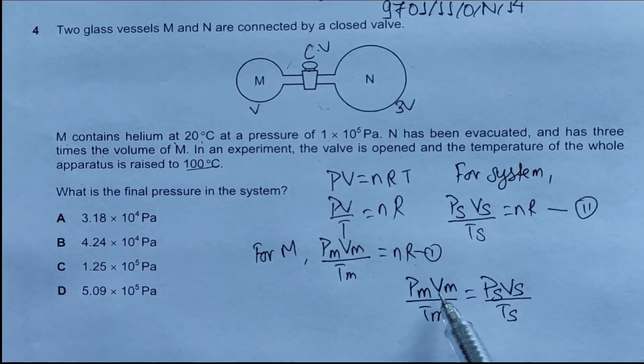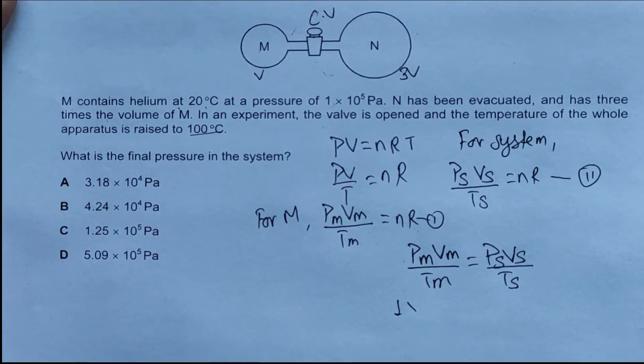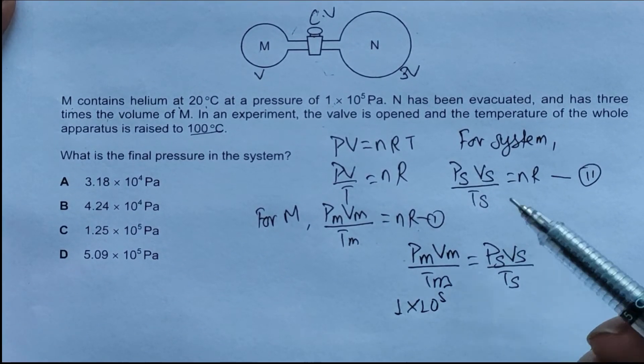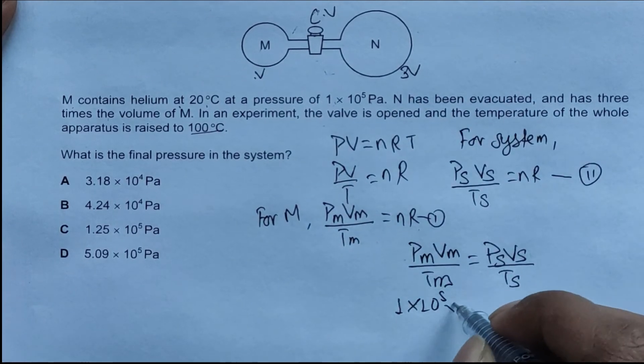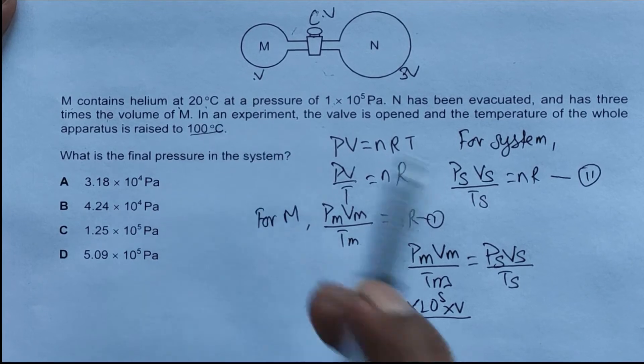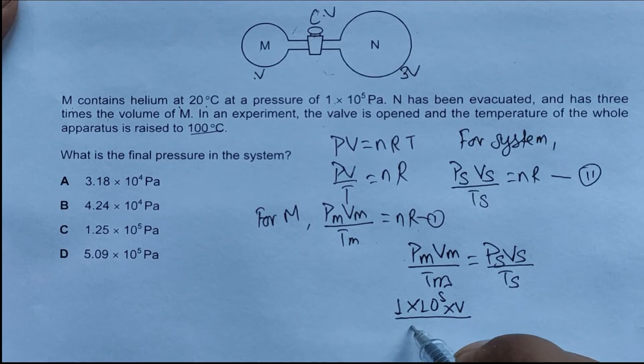Now let's fill in these equations based on what we know. P_M is 1×10^5, V_M is V, divided by T_M which is 20 degrees Celsius. Converting this to Kelvin, we have 273 + 20 = 293.